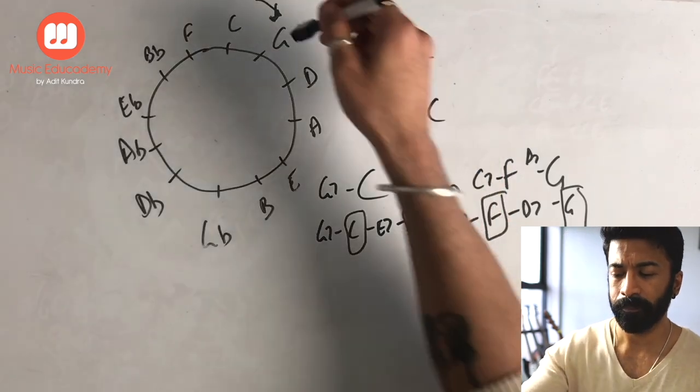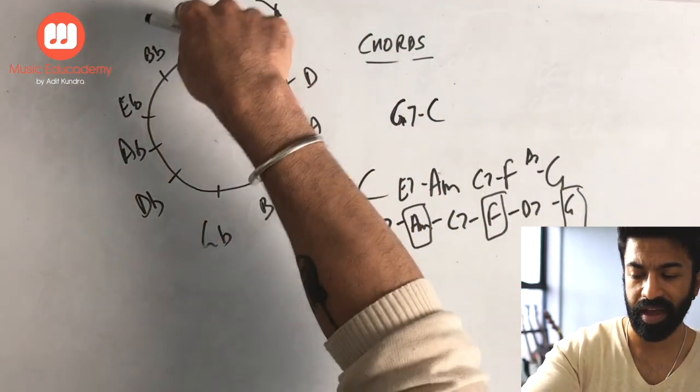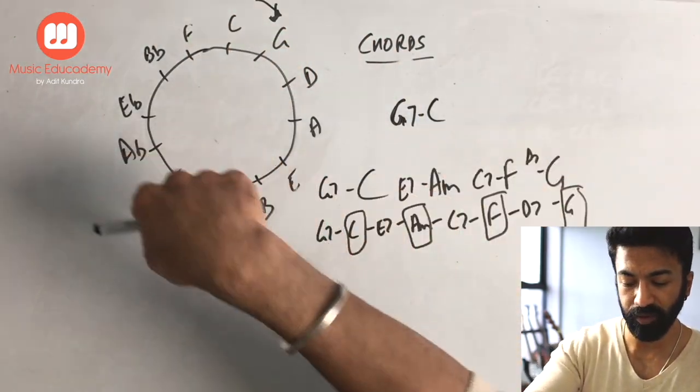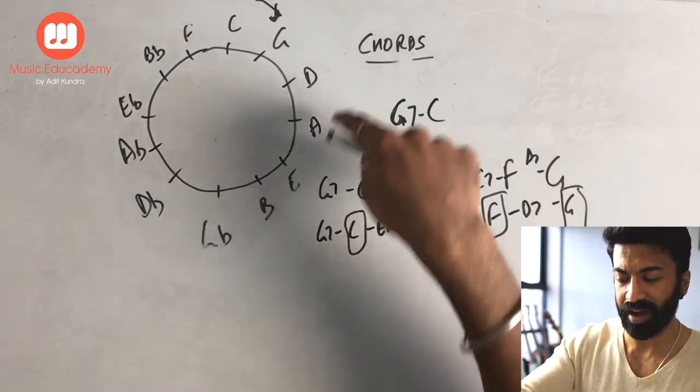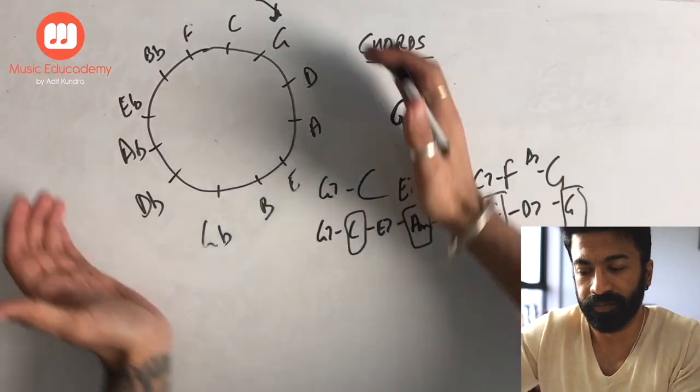So basically, G moves to a C, C moves to an F, D moves to a G, Db to a Gb, D to a G. So there are all movements in this order. Correct?